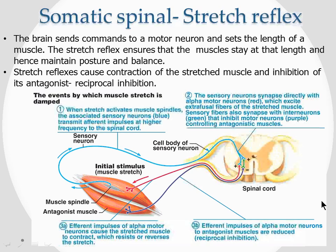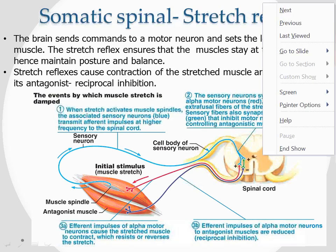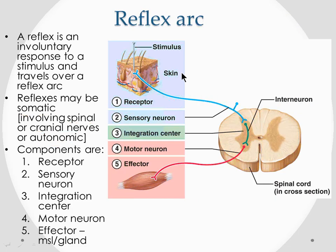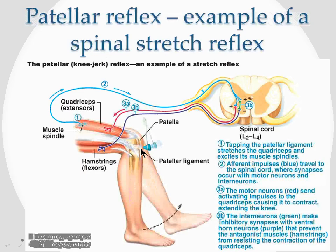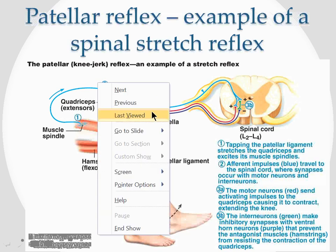One somatic reflex is pulling your hand away when you touch something hot or prick yourself. Another kind is the stretch reflex, which involves a tendon. When you tap the tendon, you distort and stretch it. That stretch stimulates the reflex — hence it's called a stretch reflex. It still has all five components: receptor, sensory neuron, integration center, motor neuron, and effector.